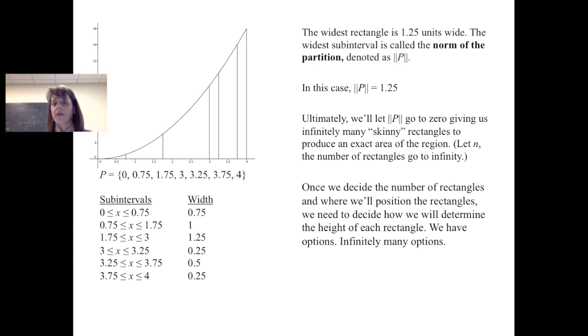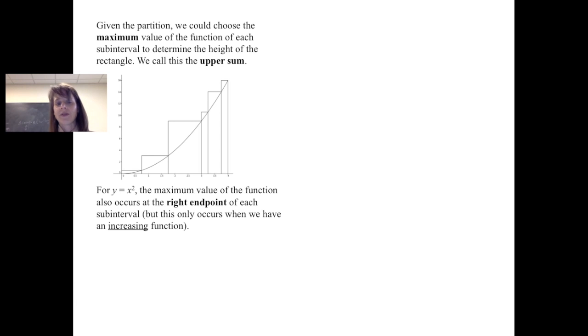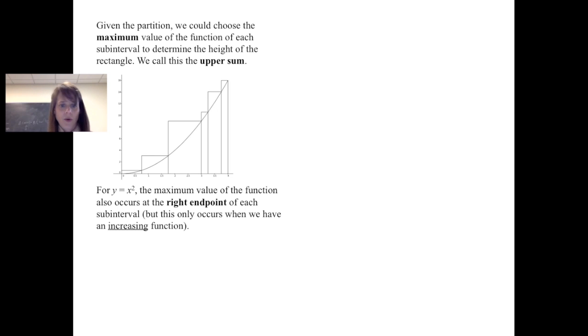Once we decide the number of rectangles and where to position them, we need to decide how to determine the height of each rectangle. We have infinitely many options. One option is to choose the maximum value of the function on each subinterval to determine the height — we call this the upper sum. Since y equals x squared is strictly increasing on the interval from 0 to 4, the maximum occurs at the right endpoint of each subinterval. Note this only holds for an increasing function; for a decreasing function, the maximum occurs at the left endpoint.